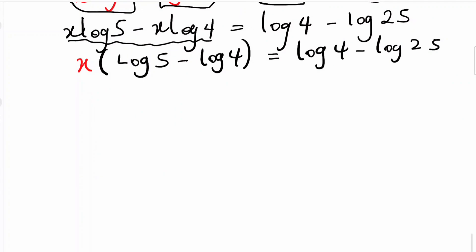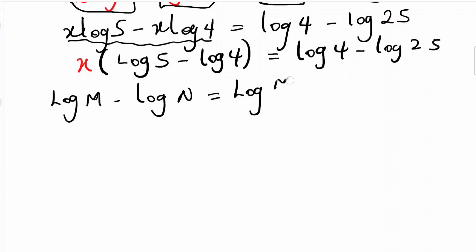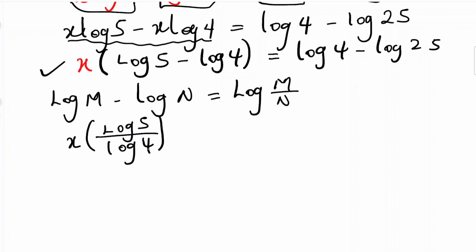At this point, from the laws of logarithm, we know that whenever we are subtracting logarithms in the same base, it is the same thing as dividing the numbers in that common base. So applying this law, x times log(5/4) is equal to log(4/25).